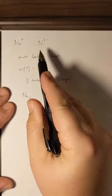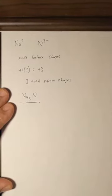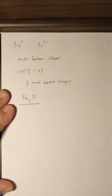So, Na3 and just the one three minus gives me Na3N as the formula.